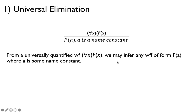Here's the first rule: universal elimination. Suppose that we have that for all x, f of x, and a is any name constant, then we can conclude that f of a. Because this is true for all x, then certainly f of a is true for any a in the domain.